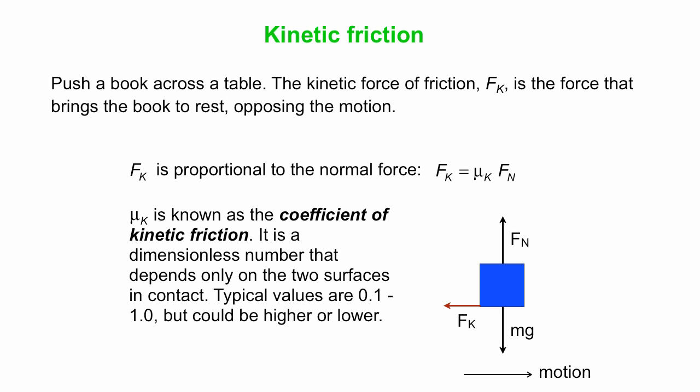The value of it depends on the two surfaces in contact. Steel on steel has a particular value of the coefficient of kinetic friction. Steel on wood has a different value. It depends on those two surfaces. Typical values might be between 0.1 and 1, but you can get lower values or even higher values than that.